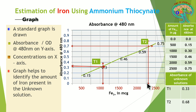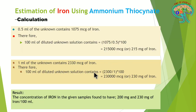From the standard curve, T1 gives a concentration of 1075 micrograms and T2 gives a concentration of 2330 micrograms.